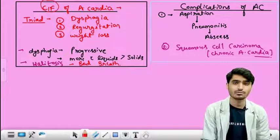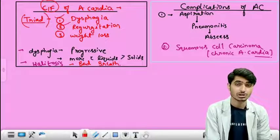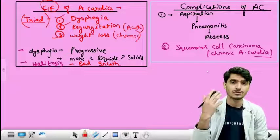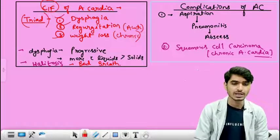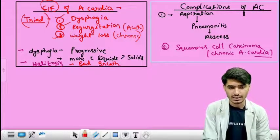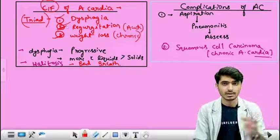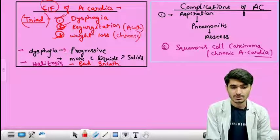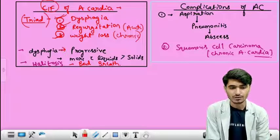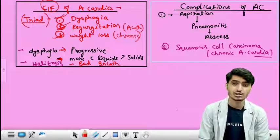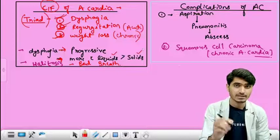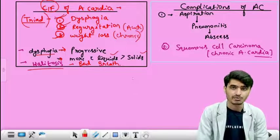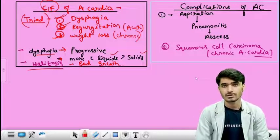The clinical features of achalasia cardia form a triad: dysphagia, regurgitation, and weight loss. Regurgitation is an acute feature, while weight loss is a chronic feature since the patient is unable to feed adequately over time. Dysphagia is progressive — as inhibitory neurotransmitters are depleted, the disease progresses. Early on, there is more difficulty with liquids than solids; later, difficulty is equal with both. Halitosis (bad breath) also occurs due to bacterial growth in regurgitated and lodged food material.